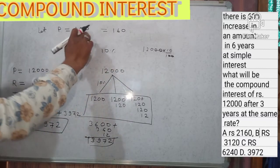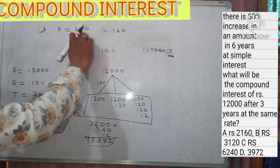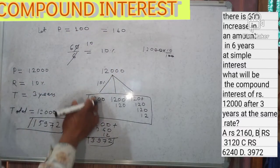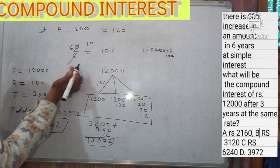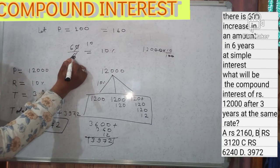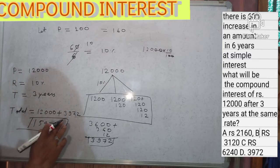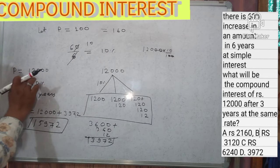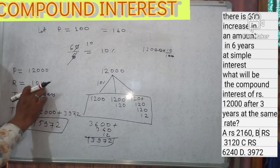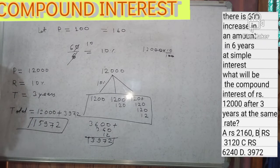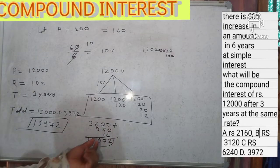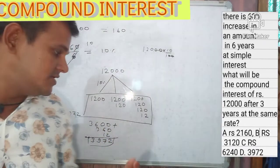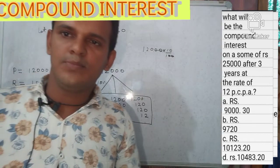To recap: let principal be 100, and after a 60 percent increase it becomes 160. The rate of interest is 60 divided by 6, which is 10 percent. With principal 12,000, rate 10 percent, and time three years, you can solve and find the compound interest. Now move to question number three.